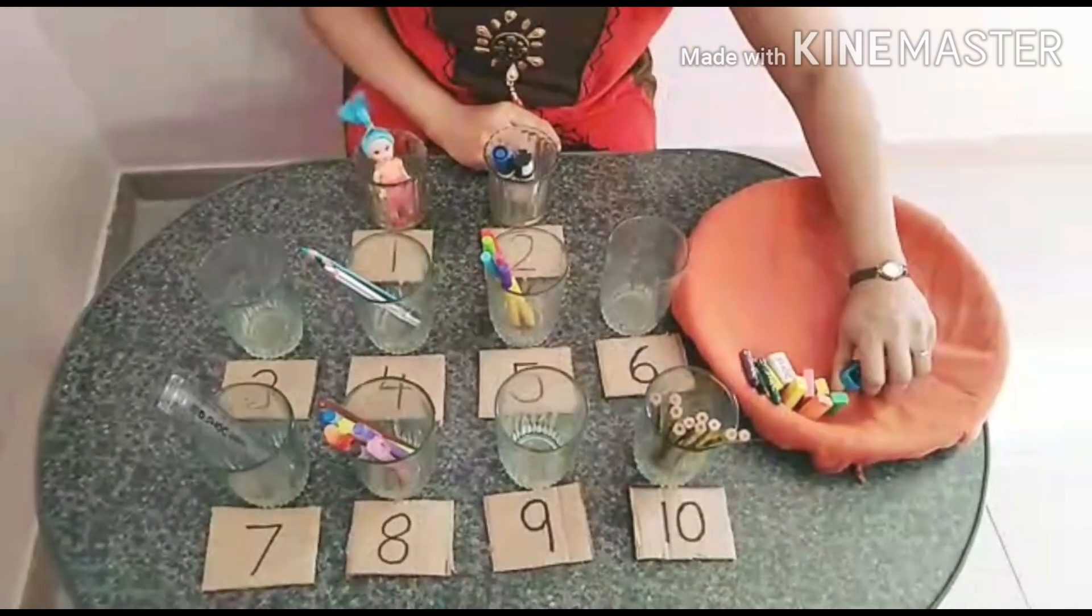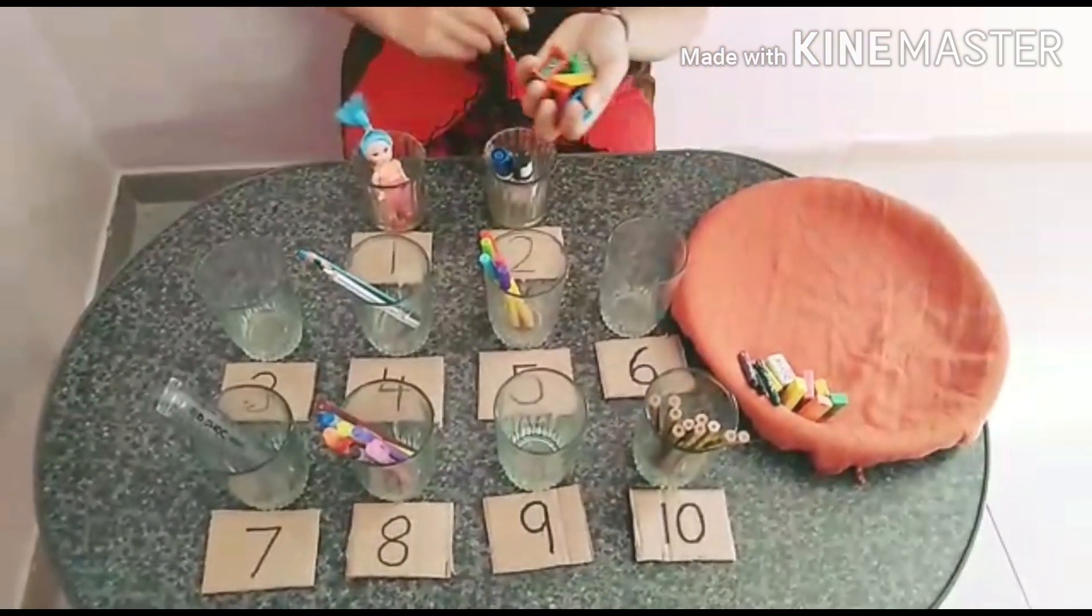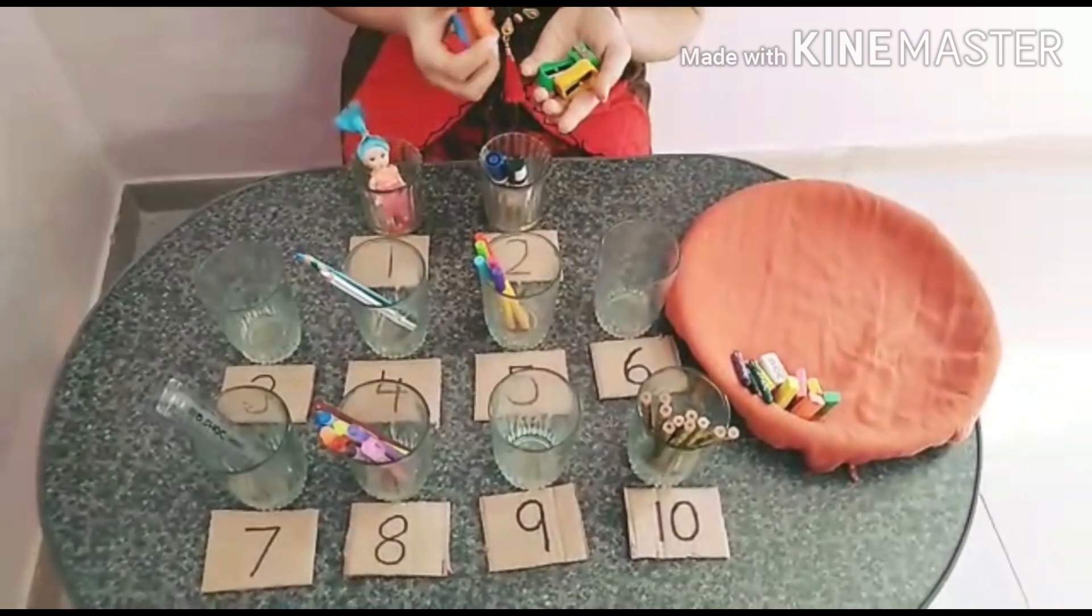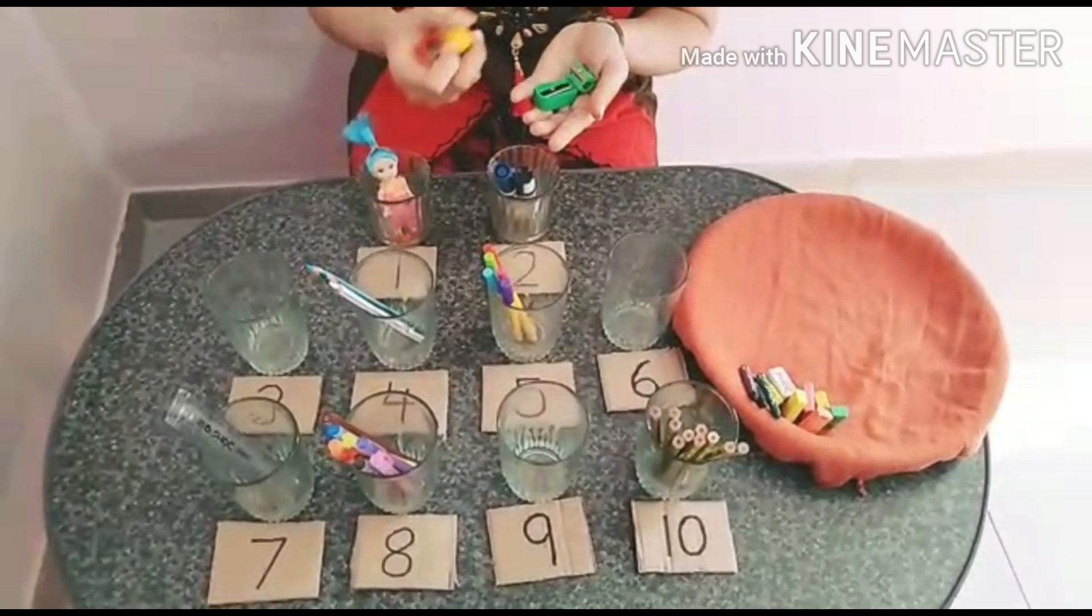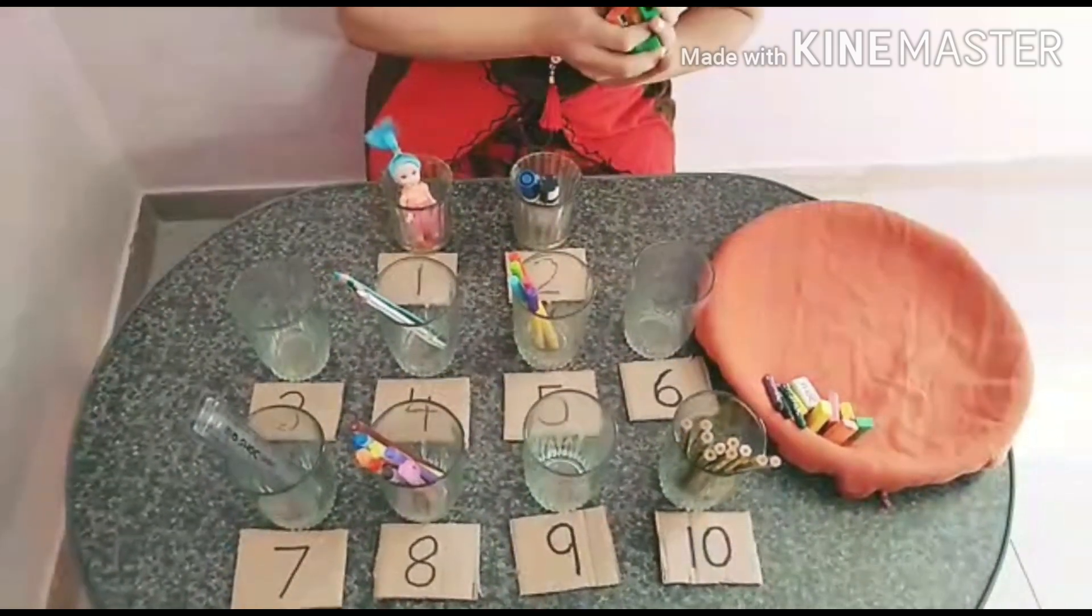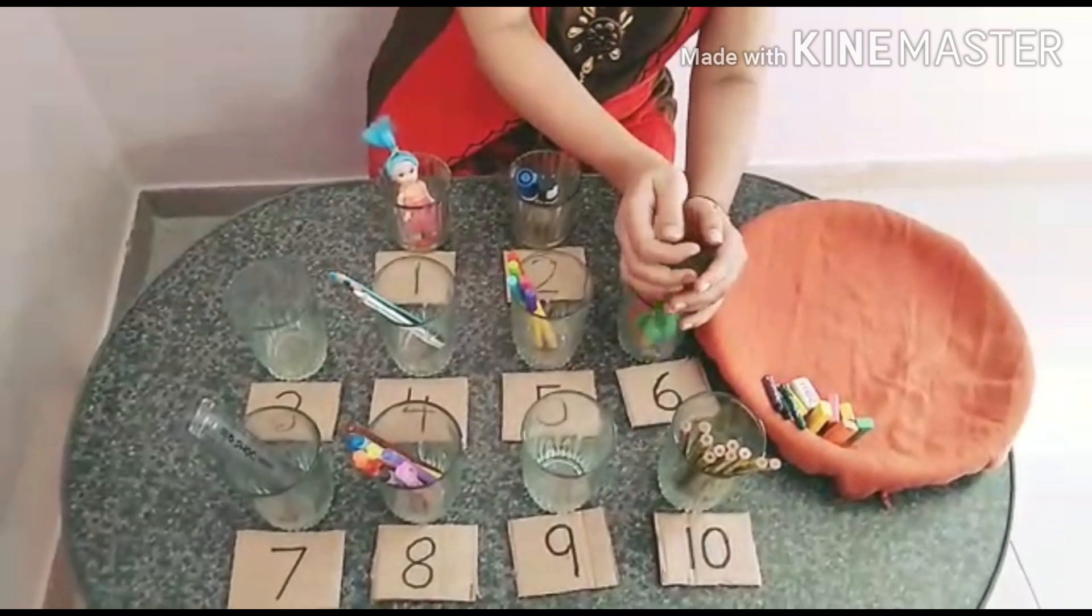Next one is sharpeners. Let's start counting. One, two, three, four, five, and six. Where is the number six? Here it is.